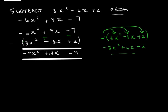Now that we've changed all the signs, we can simplify. Minus 7 minus 2 is minus 9. Positive 9x plus 4x is positive 13x. And minus 6x squared minus 3x squared is minus 9x squared. Let's do one more.